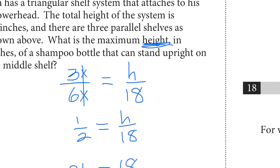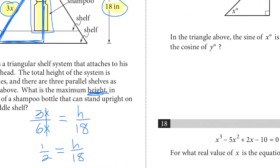And we have one half equals h over 18. And when you cross multiply, you get 2h equals 18 divided by 2, and h equals 9.